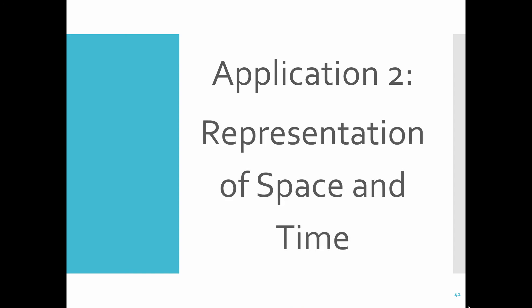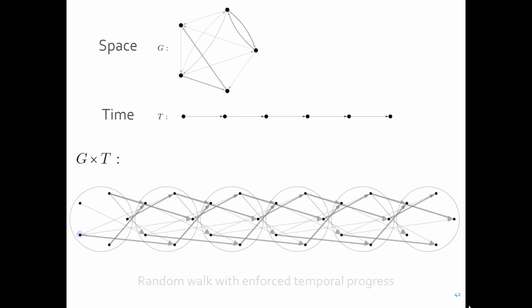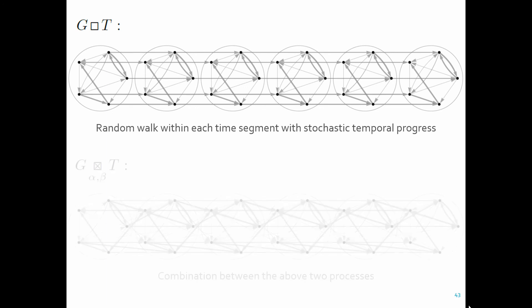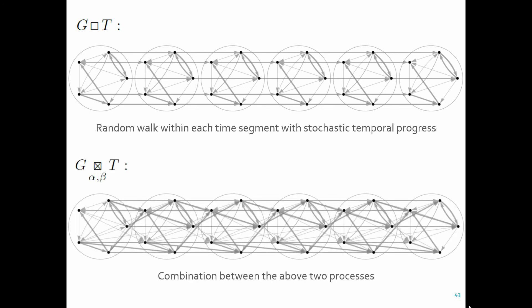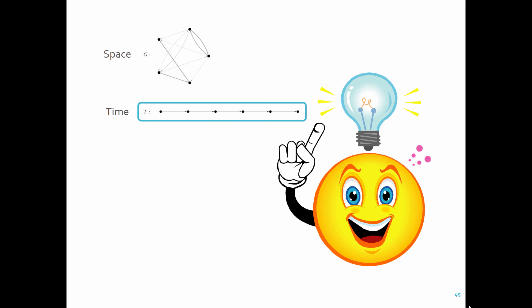The second application of graph product multi-layer networks is to use the two factor networks to represent space and time. For example, a directed product of space and time factor networks represents a random walk process with enforced temporal progress. Other graph products can also offer some physically meaningful interpretations. But this idea may sound rather weird. You may wonder, sure, space can be represented as a network, but how come we need to use a network to represent time, which is essentially just a linear sequential thing? Well, the answer is, if you use a network as a representation of time, you can describe many non-trivial temporal structures such as cyclical nature of time in a seasonal process.